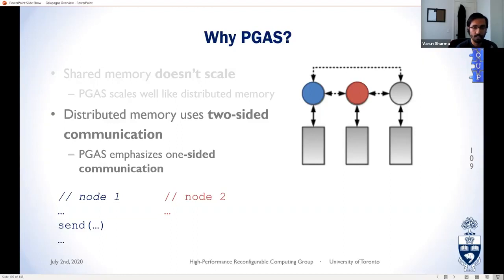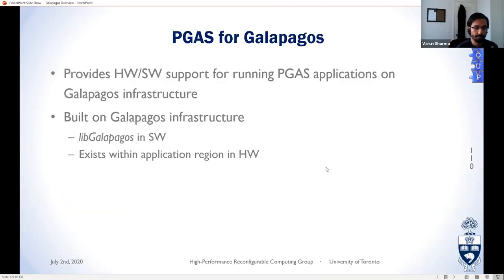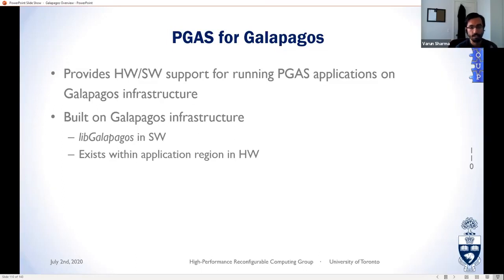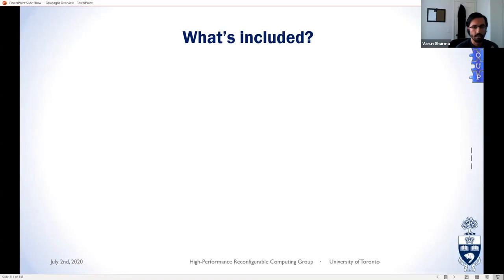One-sided communication is easier to write than two-sided and is more akin to shared memory patterns where data can be freely exchanged. To enable this functionality we need additional support on each node to handle requests. PGAS on Galapagos provides support for running PGAS applications on Galapagos as the highest application programming layer, leveraging all the infrastructure below. In software this corresponds to libGalapagos, a C++ template library for communication among software and hardware Galapagos kernels. In hardware, the IPs fit into the application region of the Galapagos shell, built as part of the default Python/Tcl script flow.